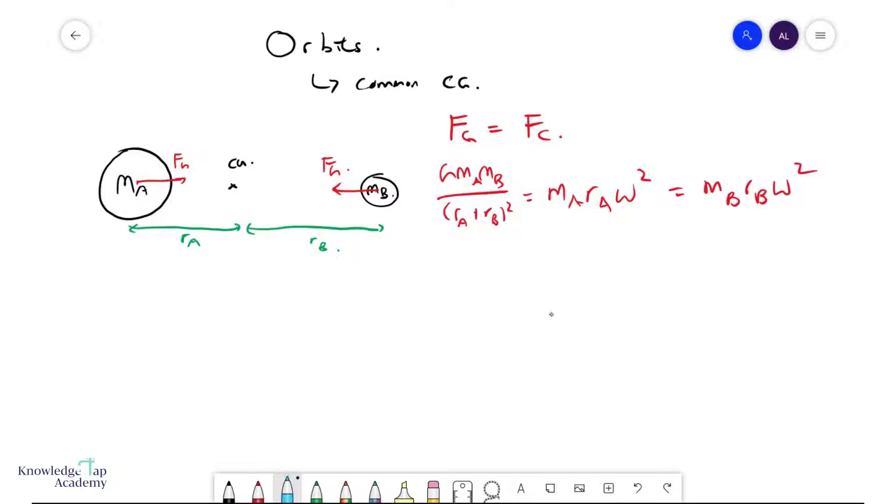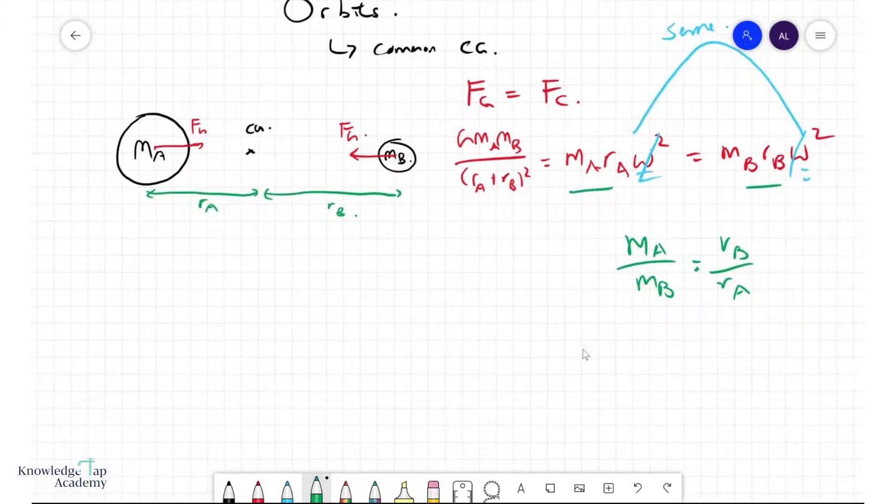Now, because they rotate around the same center of mass, they have to complete one full circle at the same time, and so they have the same angular velocities. Remember that this is the same for both masses, and so they can cancel away, and one interesting result from these two is that their masses are inversely proportional to their orbital radii, and so big guys will have small orbital radii, and small guys will have large orbital radii.